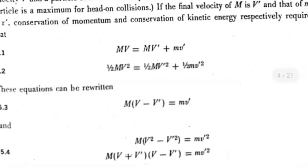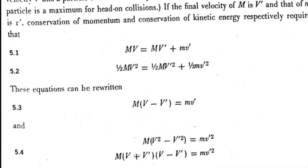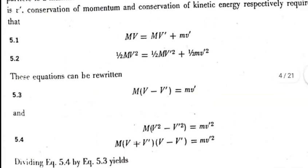If we write conservation of momentum and kinetic energy, then capital M times capital V plus - the electron is at rest so its velocity is zero, making that term zero - equals capital MV prime plus small m small v prime. Taking capital V prime to the other side, M is common, so M(V minus V prime) equals mv prime.